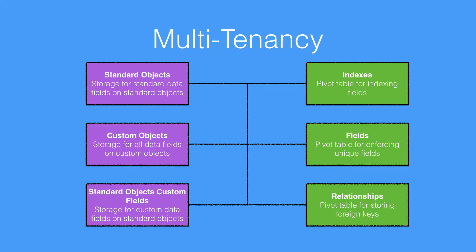This is a very high-level view of Salesforce's data architecture in the background. On the right-hand side we can see, in the green boxes, a series of different pivot tables for allowing us to create indexes and correctly retrieve the data — something like an index table for the different fields that are indexed. We'll go through what indexes are and how indexing works in future videos. We also have a table for how unique fields are enforced and also one for foreign key relationships.